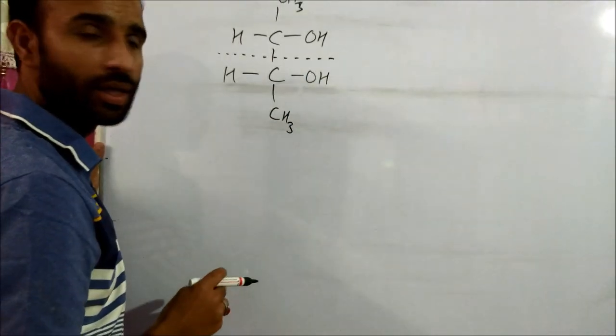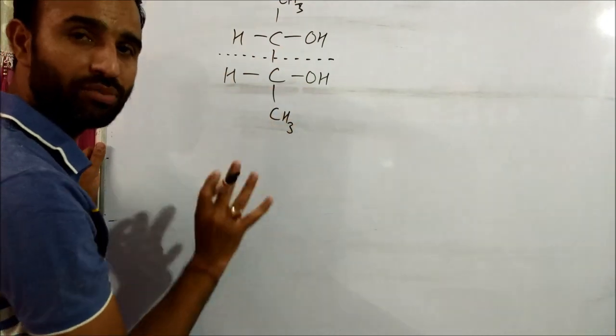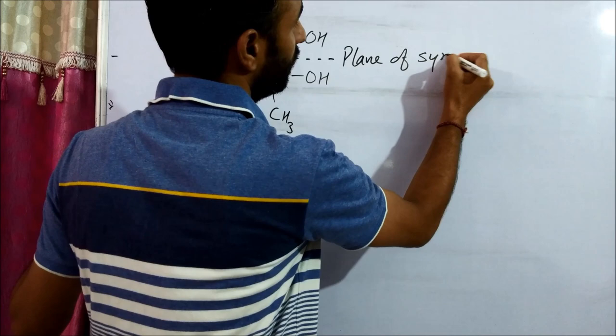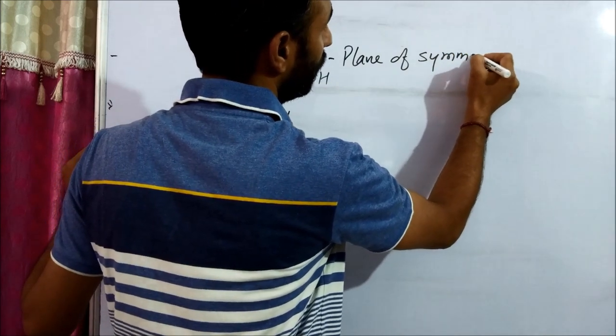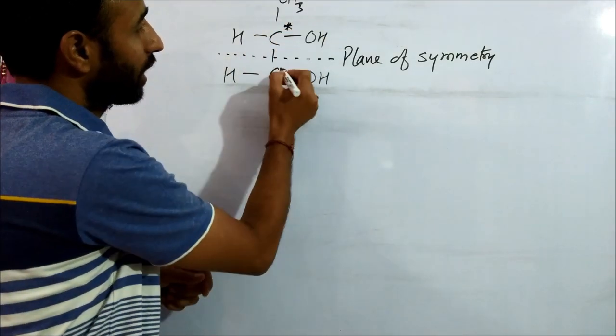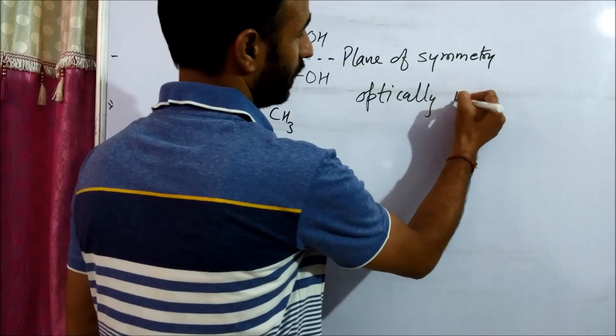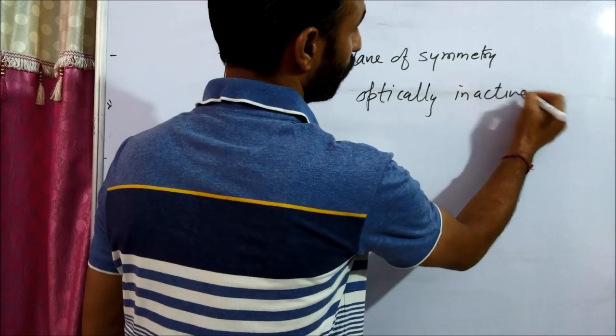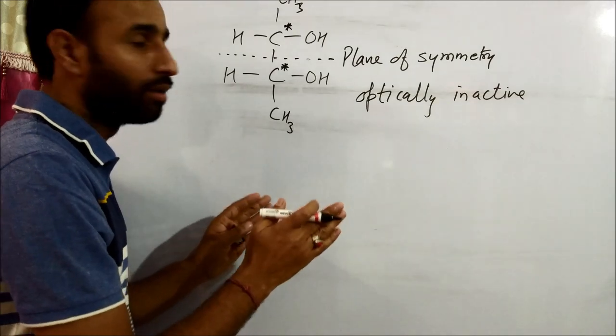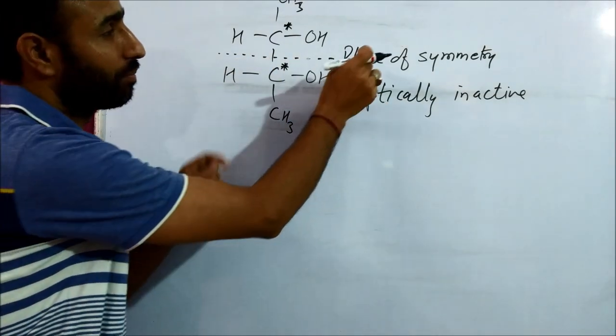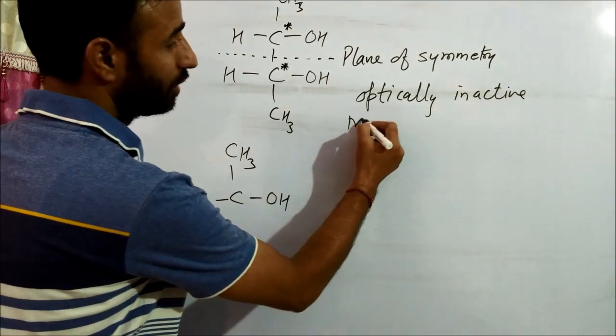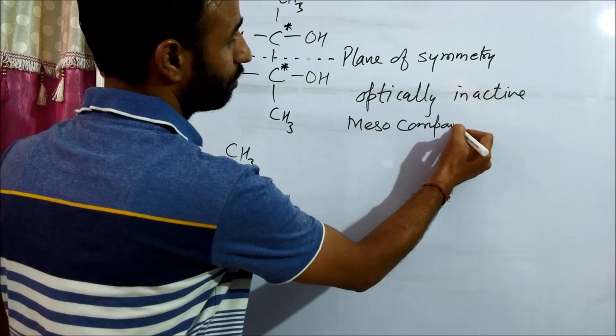This plane can cut the molecule into two equal halves, so this is called plane of symmetry. The molecule having plane of symmetry, though this molecule has two symmetric centers, two chiral carbons, but it is optically inactive because it cannot rotate the plane polarized light. Because the essential condition is dissymmetry: no plane of symmetry, no center of symmetry, no axis of symmetry. This is called a meso compound.